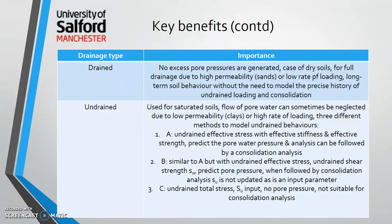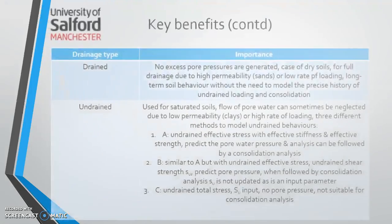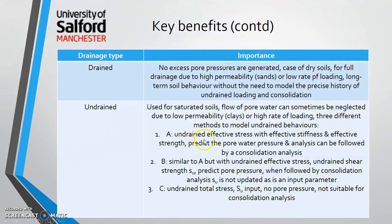Under undrained conditions, there are three different types. Undrained A and B both generate pore water pressure, whereas Undrained C looks at undrained total stress strength without computing pore pressure, making it unsuitable for consolidation analysis. Undrained A looks at the undrained effective stress with effective stiffness, while Undrained B looks at undrained effective stress with a different stiffness formulation. You select each undrained type depending on your model.